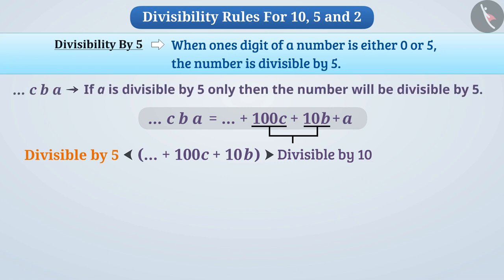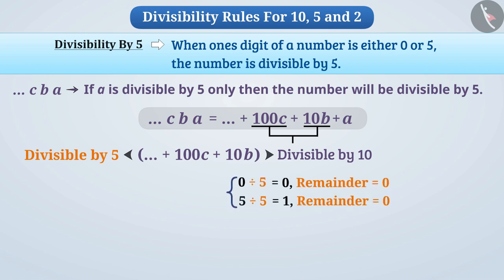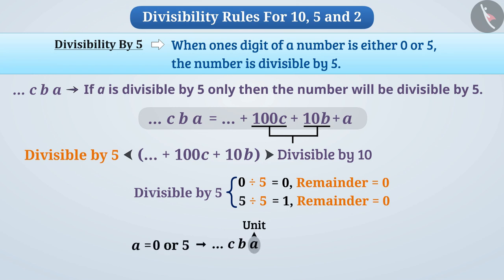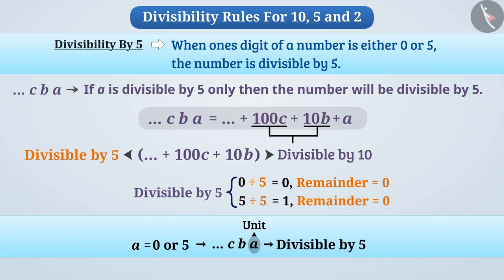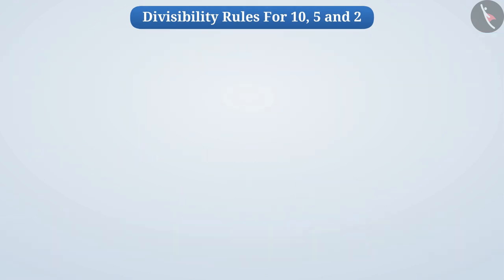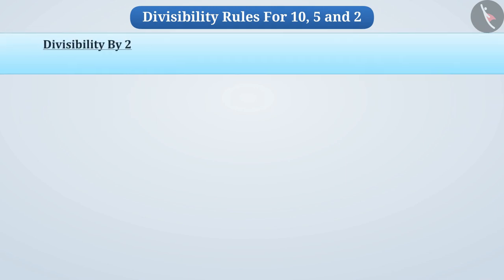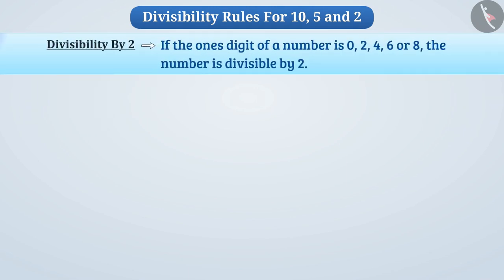Thus the divisibility of this number by 5 depends on the ones digit. If A is divisible by 5, only then will the number be divisible by 5. But 0 and 5 are the only digits which are divisible by 5 — any other digit is not divisible by 5. In this way, if the ones digit of a number is 0 or 5, the number is divisible by 5.